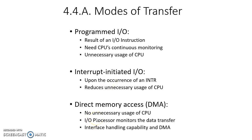Now let us go to the last one — direct memory access. This is the most efficient method of data transfer between IO devices and memory. Here, the CPU allocates the resources required for data transfer to an IO processor, which will monitor the data transfer between memory and IO devices. Meanwhile, the CPU will stay idle. That is better — either the CPU should execute instructions, or it should stay idle; it should not be doing less important work. Either it should do intelligent work or do no work, but it should not engage in less important works.